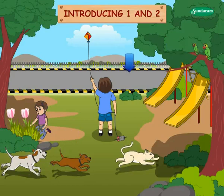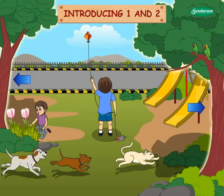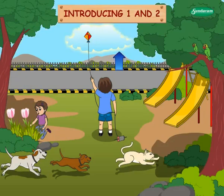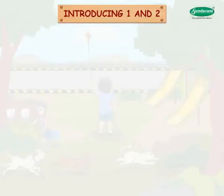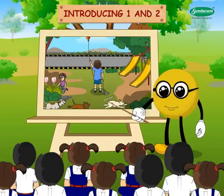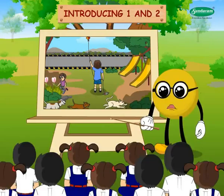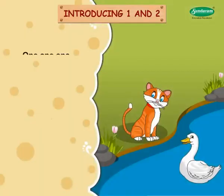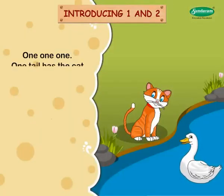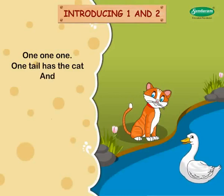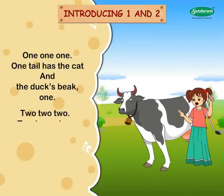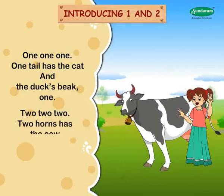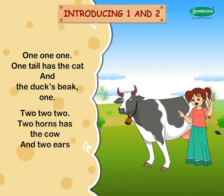Don't you see one road? And two trees. One cloud. Two tree shadows. And two tufts of grass. Let us now sing the number jingle for one and two. One one one — one tail has the cat, and the ducks speak one. Two two two — two horns has the cow, and two ears too.